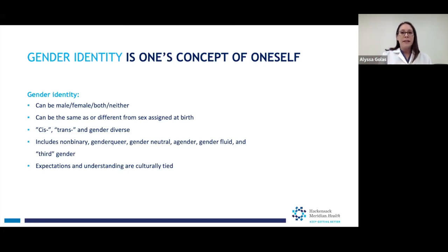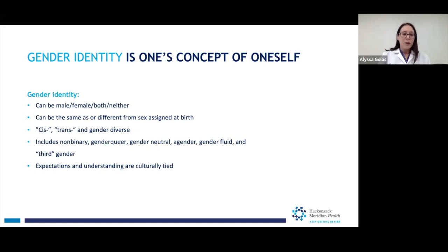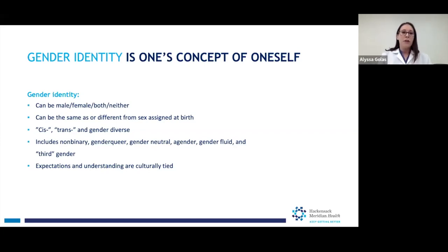Those are two very dichotomous things — it's either one or the other. But we also have to remember that gender identity occurs across the spectrum. We use the term gender diverse to represent that it doesn't have to be just one or the other. Gender identity can include people who see themselves as non-binary, gender queer, gender neutral, agender meaning no gender, gender fluid, or even a third gender in some cultures. Gender identity and the expectations and understanding of what gender identity is are culturally tied. We tend to approach it from a very Western perspective, but this varies across the world and across cultures.